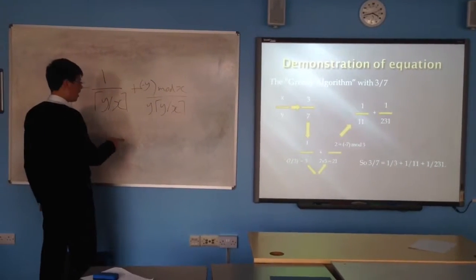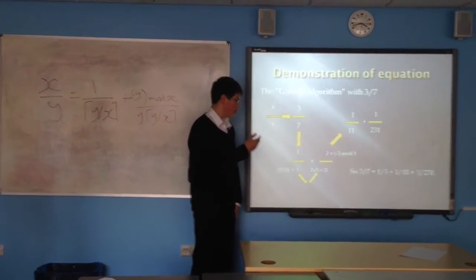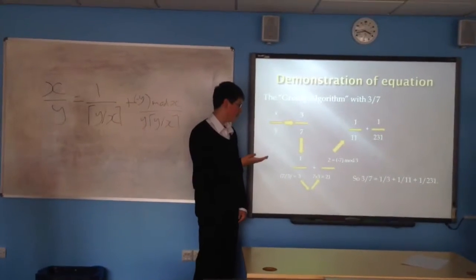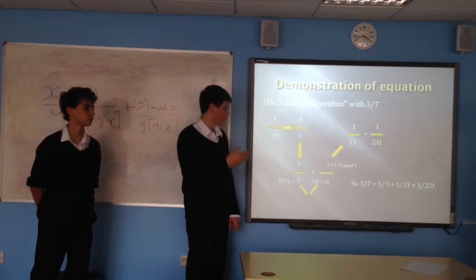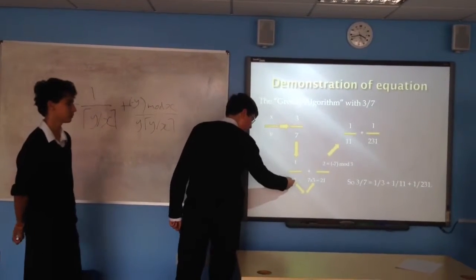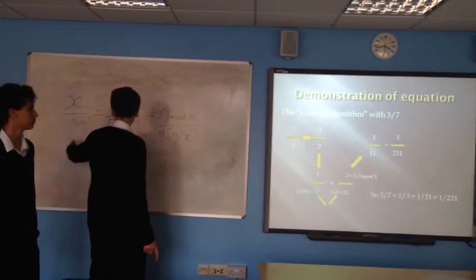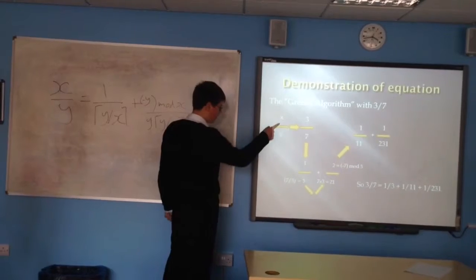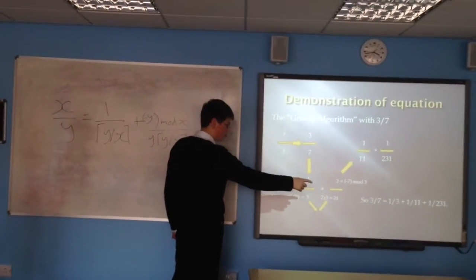The remainder is added: we need minus 7 mod 3. Starting from -7 and adding 3 each time: -7, -4, -1, 2. So the remainder is 2. Then 3 multiplied by y, which is 7, gives 21. So we've found that 3/7 equals 1/3 plus 2/21.